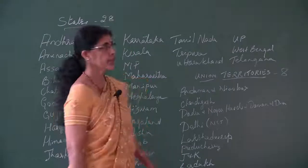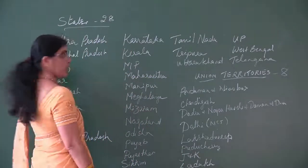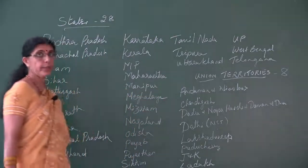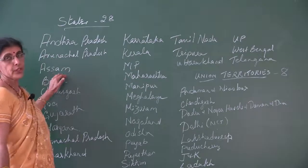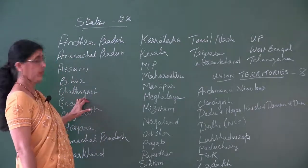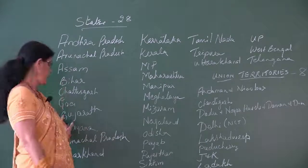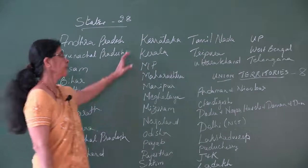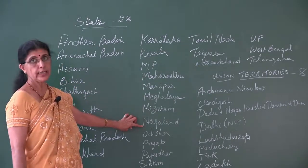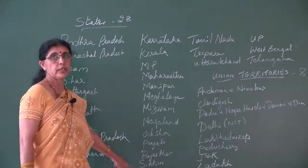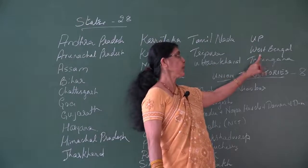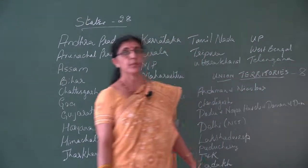The 28 states in alphabetical order are: Andhra Pradesh, Arunachal Pradesh, Assam (A to the power of 3), Bihar, Chhattisgarh, Goa, Gujarat (G squared), Haryana, Himachal Pradesh, Jharkhand, Karnataka, Kerala, Madhya Pradesh, Maharashtra, Manipur, Meghalaya, Mizoram, Nagaland, Odisha, Punjab, Rajasthan, Sikkim, Tamil Nadu, Tripura (T squared), Uttarakhand, Uttar Pradesh, West Bengal, and Telangana — formed in 2014.